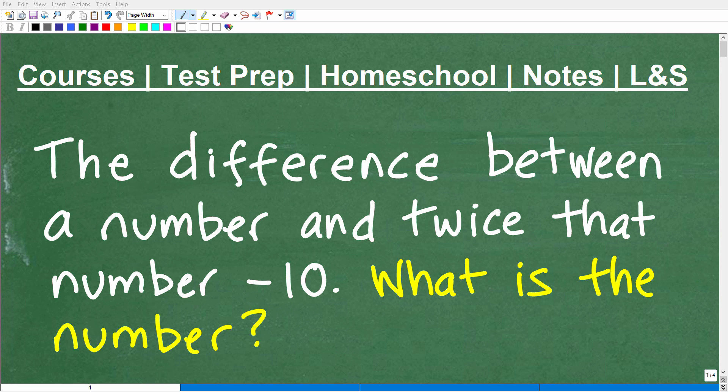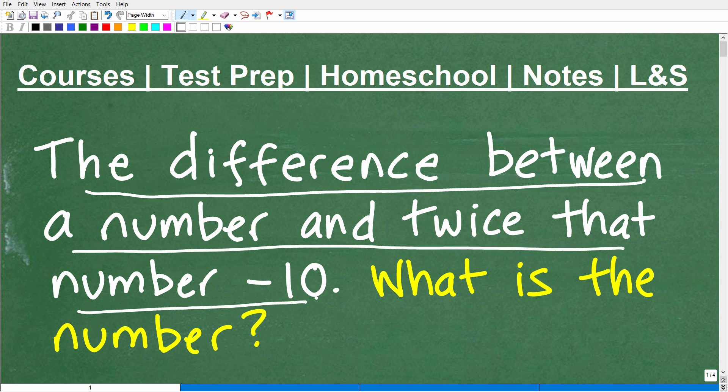Okay, let's go ahead and solve this nice little math word problem here. And of course, the first step in solving any problem in mathematics is to read the problem. So let's go ahead and do that right now. It says the difference between a number and twice that number is negative 10. What is the number?